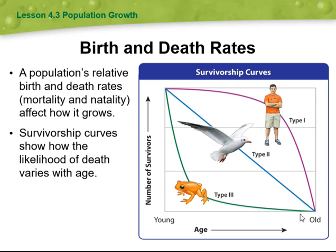Then we have birth and death rate. A population's relative birth and death rates — or mortality — affect how it grows. Survivorship curves show how the likelihood of death varies with age. As you can see in this graph, we have type 1, type 2, and type 3, with the y-axis showing the number of survivors and the x-axis showing age.